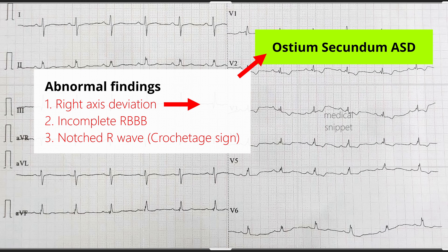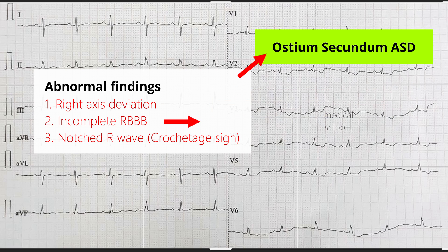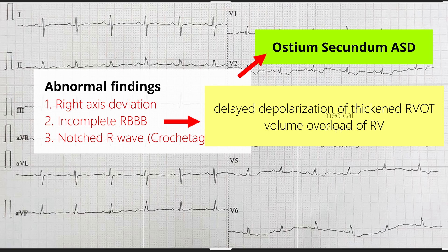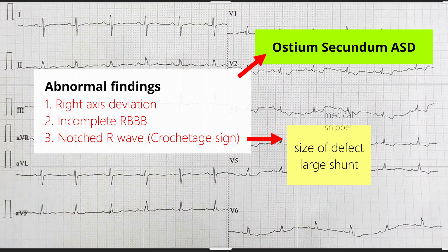Right axis deviation is due to volume and pressure overload of the right ventricle. Incomplete right bundle branch block is due to delayed depolarization of the thickened right ventricular outflow tract, and possibly due to right ventricular volume overload. The notched R wave correlates with the size of the defect and implies a greater degree of shunting. It disappears after the defect closure. The notched R wave in the inferior leads is called the Crochetage sign.